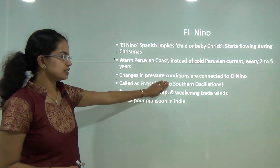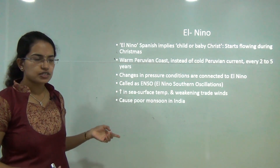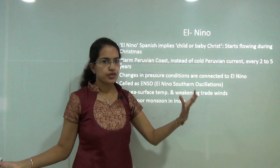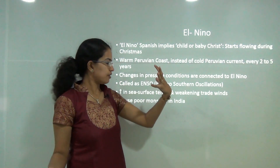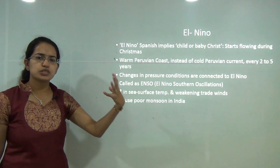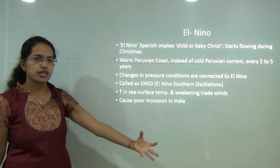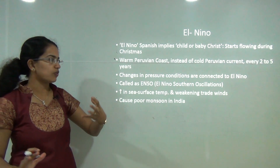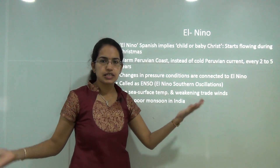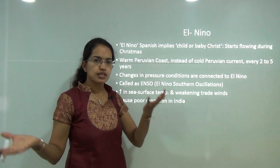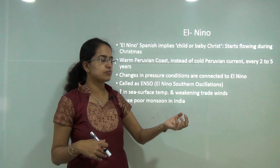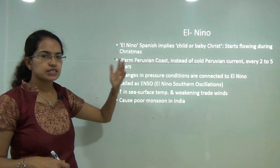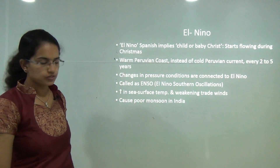El Niño leads to an increase in sea surface temperature and weakening of trade winds, as well as extremes of temperature. There would be poor monsoons in India while America gets ample rainfall — extreme differences between the Pacific and Indian Oceans. La Niña is the reverse phenomenon of El Niño.